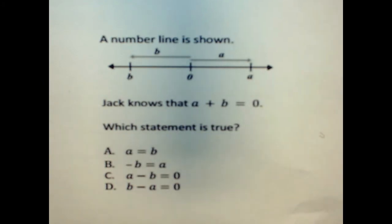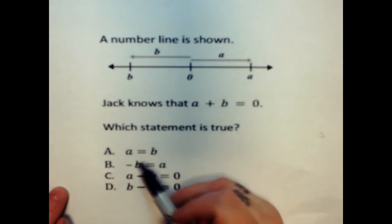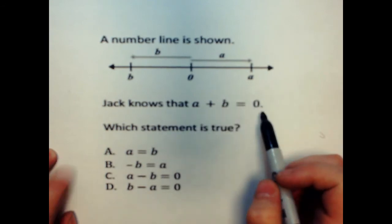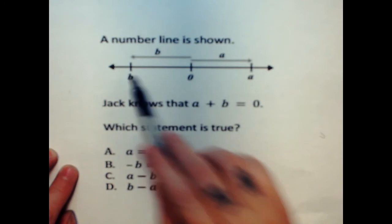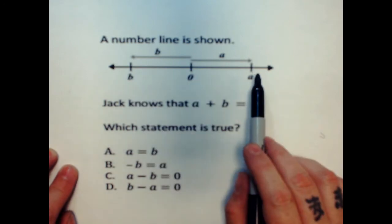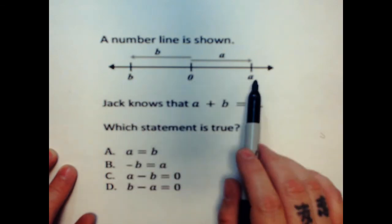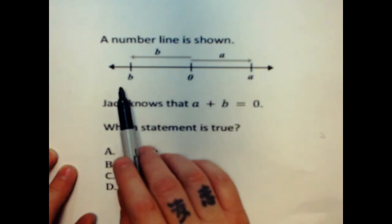We know A plus B equals zero. We can think back to the beginning of the year, and there was a certain term we used when a number and a number equaled zero. We called that a zero pair. Remember that we had a number plus its opposite would always give us zero. When I see a number line like this, and there's no values on it, and I know that A plus B equals zero, they must be the same distance away.